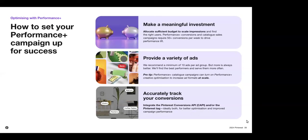Second, provide a variety of ads. We recommend a minimum of 10 ads per ad group, but more is always better. We find the best performers and serve them more often. If you're using catalog sales objective, an easy win is to use Performance Plus Creative to improve your ad visuals and scale. And thirdly, accurately track your conversions. Make sure you integrate the Pinterest Conversions API or have the Pinterest tag — ideally both — for better optimization and improved campaign performance.